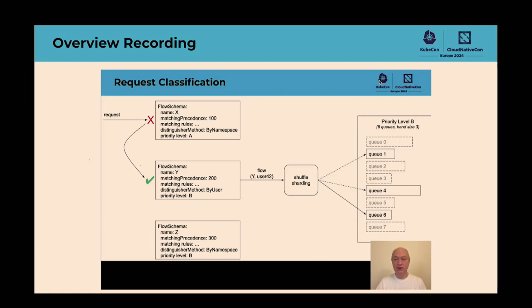A flow schema can make one of three choices for the second string in the flow identifier: the namespace of the object the request will act on, the name of the user issuing the request, or the empty string. The flow identifier is the input to shuffle sharding, which puts the request into one of the queues in the priority level. A priority level is configured with a fixed number of queues and a hand size — the size of the subset of queues considered for a given request. Shuffle sharding uses the flow identifier as a source of entropy to pick that subset, and the request is placed in the queue with the shortest length. This maps a large number of flows onto a small number of queues so that big flows don't crowd out smaller ones.